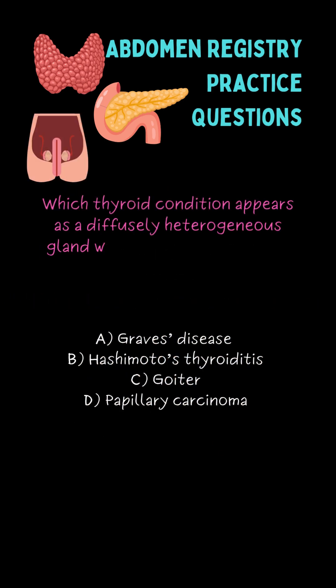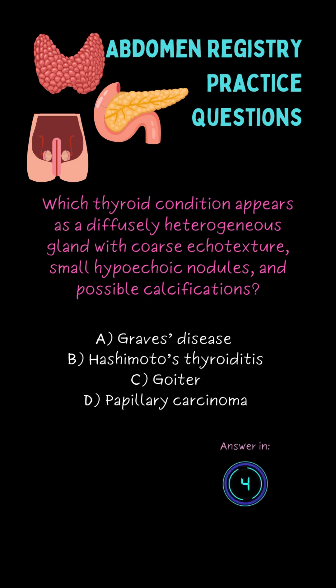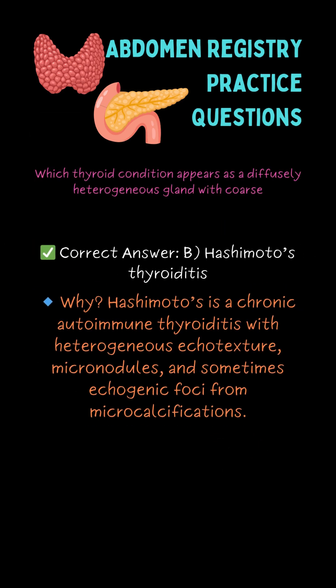Which thyroid condition appears as a diffusely heterogeneous gland with coarse echo texture, small hypoechoic nodules, and possible calcifications? B. Hashimoto's thyroiditis.